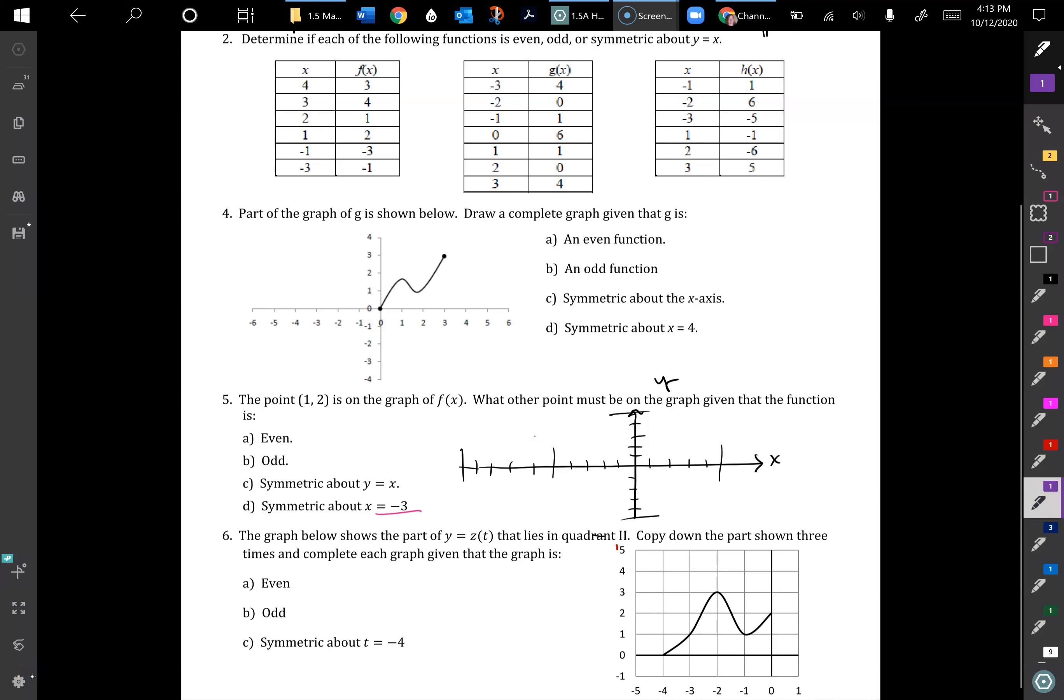This question is for Math 141, a homework problem request. It's problem 1.5, part 5d. The question asks: if we have something symmetric about a line, in this case a vertical line at x equals negative 3, and we have the point (1, 2) on the graph, what other points must be on the graph given that the function is symmetric?